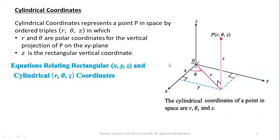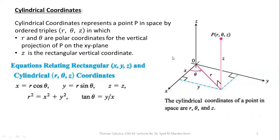Some equations relating rectangular coordinates and cylindrical coordinates are: X equals R cos theta, Y equals R sin theta. These are also the transformation equations for polar coordinates in two dimensions. For the third axis, we take Z equal to Z. Also, R squared equals X squared plus Y squared, and tan theta equals Y over X, so theta equals tan inverse of Y over X.